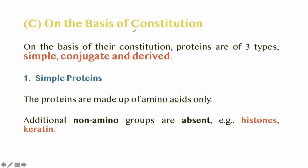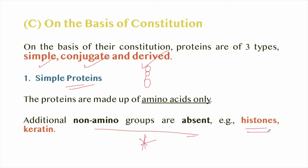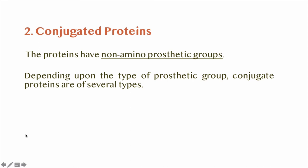On the basis of constitution, proteins are of three types: simple, conjugated, or derived. Simple proteins are made up of amino acids only — no additional non-amino groups are present. Examples are histones (proteins found associated with DNA) and keratin. Conjugated proteins have a non-amino prosthetic group attached. Depending upon the type of prosthetic group, conjugated proteins are of several types.